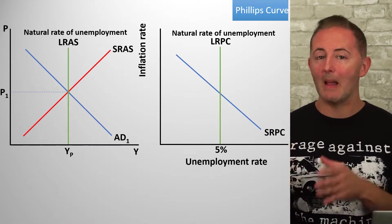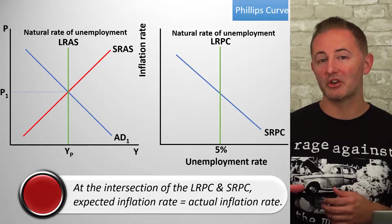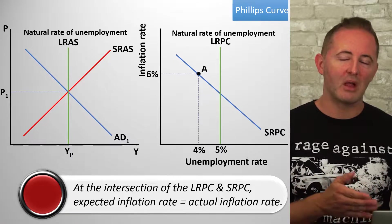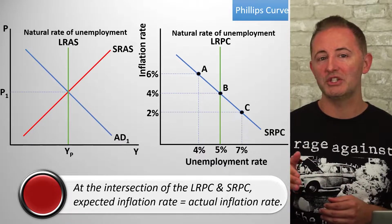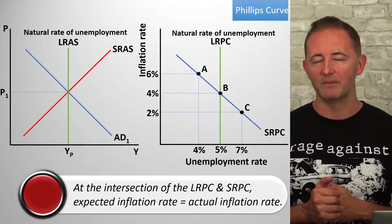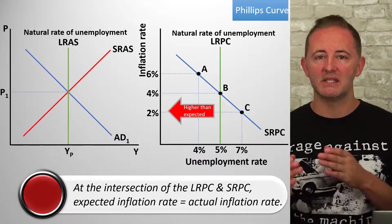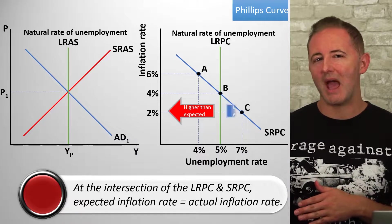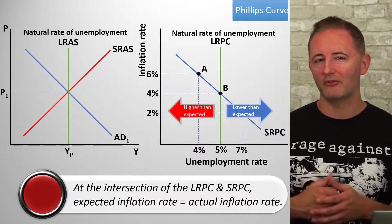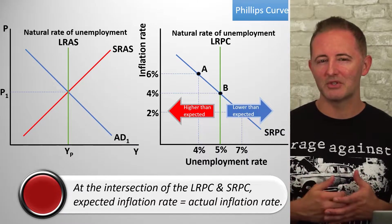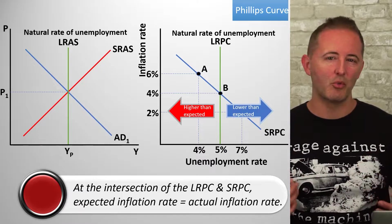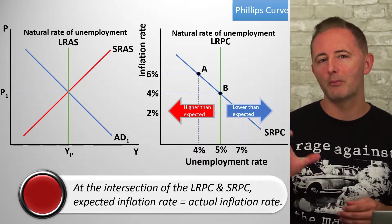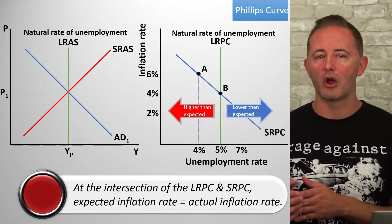At the intersection of the SRPC and the LRPC, the actual inflation rate equals the expected inflation rate. If we're anywhere to the left of the LRPC, actual inflation is higher than expected inflation — for example, at point A, inflation is 6% while people only expected 4%. Anywhere to the right, actual inflation is lower than expected inflation. You need to know these statements even without the numbers, as they'll become important when we go from the short run to the long run.